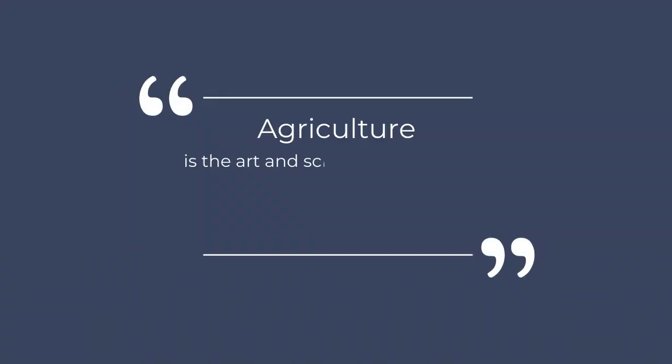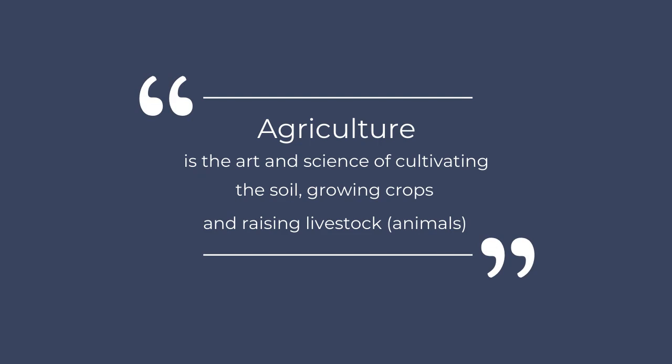The second underlying issue going on during the 1920s had to do with the agricultural sector. Agriculture is the art and science of cultivating the soil, growing crops, and raising livestock. There was something going on in the farming sector in the United States that was going to lead to the downfall of the 1920s.